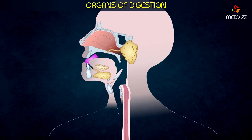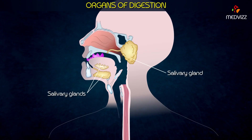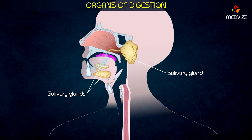Digestion begins in the mouth, where the teeth break food into smaller particles during mastication. Salivary glands, located near the oral cavity, secrete saliva, which begins chemical digestion and keeps the food moist.